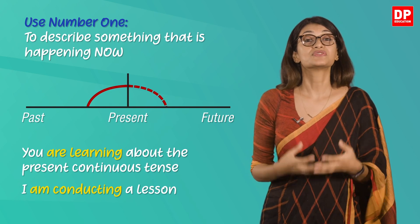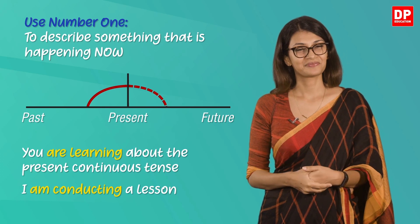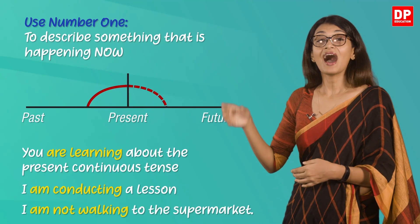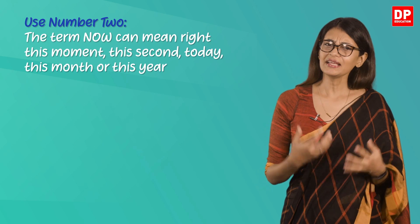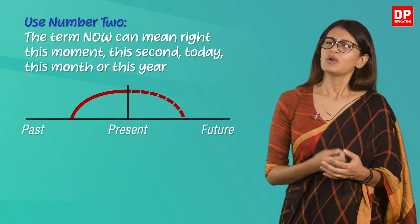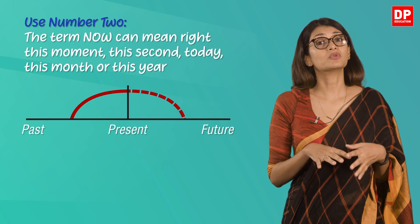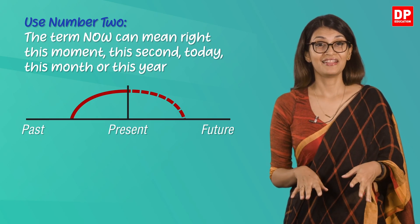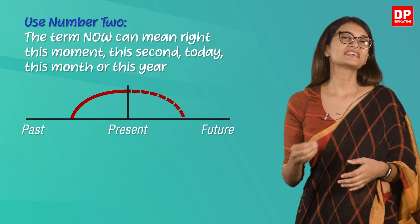The present continuous is also used to show something that is not happening now — for example, 'I am not walking to the supermarket.' Use number two: in English, when we use the term 'now' it could mean right this moment, this second, today, this month, or this year. We use the present continuous to show something that is happening in this extended sense of 'now'.